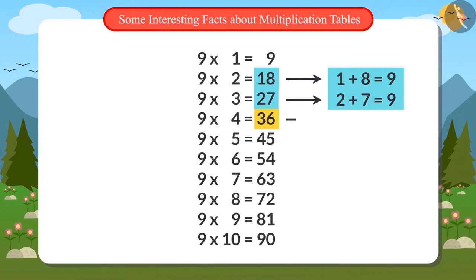The fourth number is 36. Adding both 3 and 6, we get the answer 9. The fifth number is 45. On adding the digits 4 and 5, the answer is also 9.